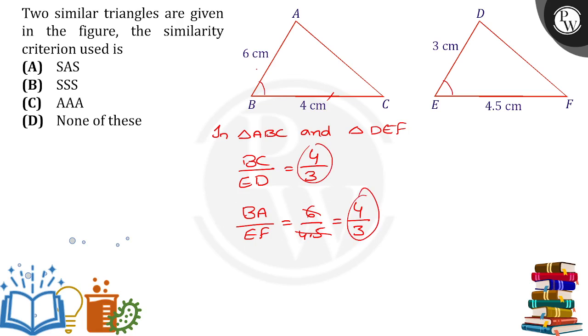The corresponding sides ratio is same and they both are having the same angle. Angle B is equal to angle E, so by using SAS,